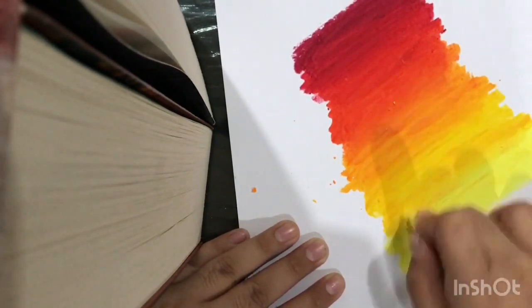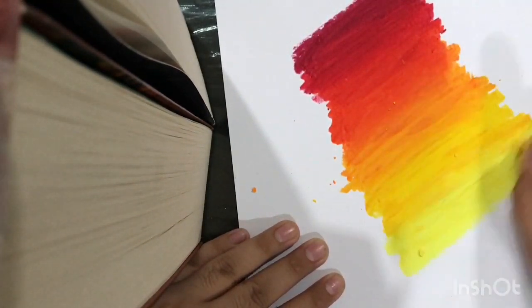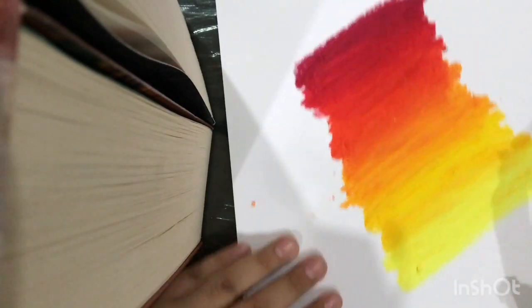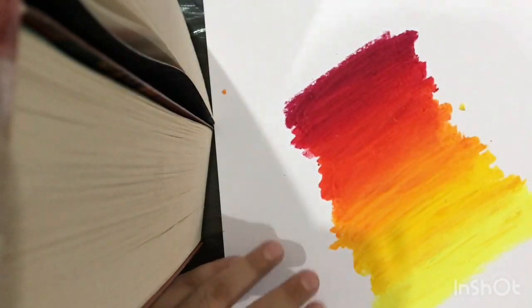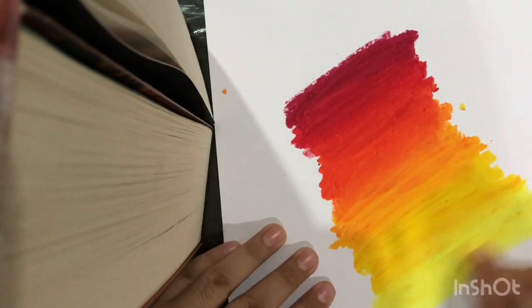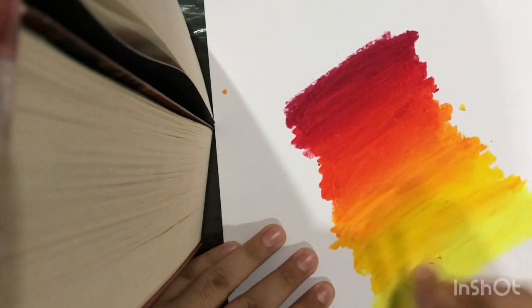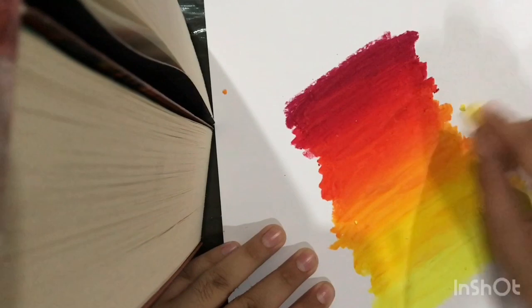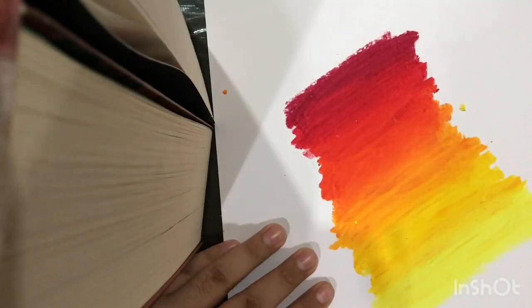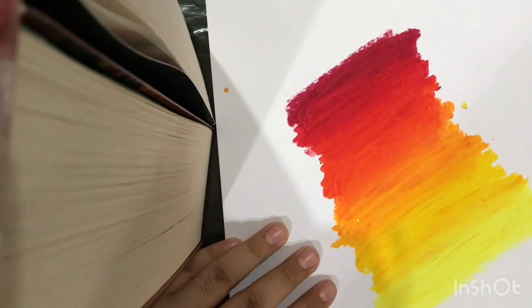When you're coloring a sun you can always use these colors, these are the standard and basic colors. Whenever you're going to learn oil pastels this is the first shading anybody will teach you because this is the easiest color shading. So yeah it's good and you should try it.